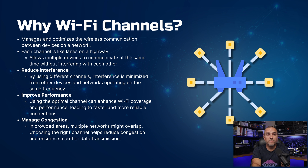By using different channels, interference from other devices and networks operating on the same frequency is minimized. Selecting the optimal channel can enhance Wi-Fi coverage and performance, resulting in faster and more reliable connections. Also, in densely populated areas where multiple networks overlap, choosing the right channel helps reduce congestion and ensure smoother data transmission.